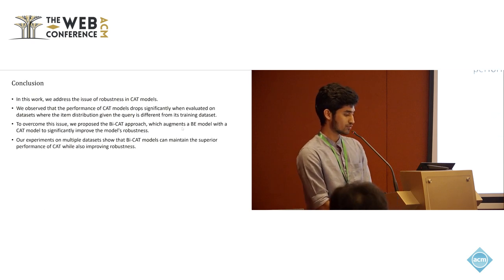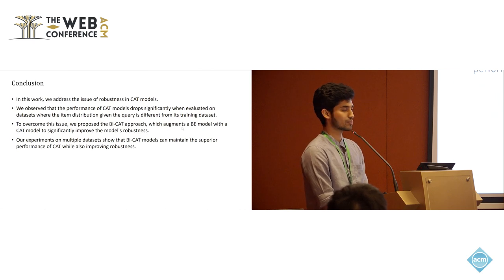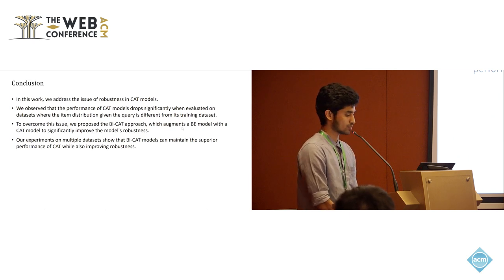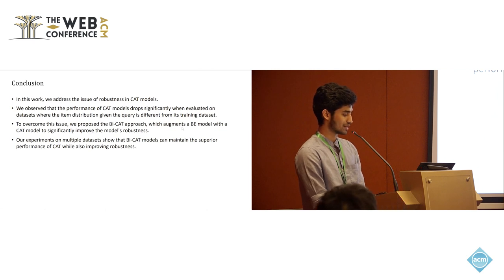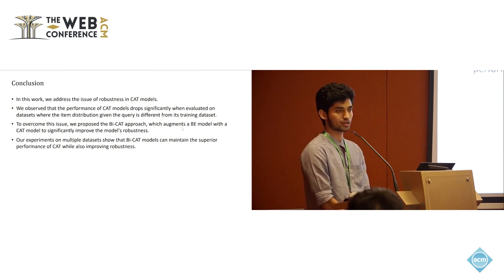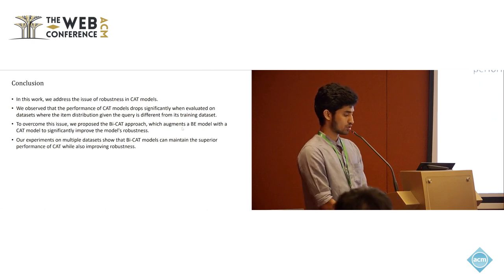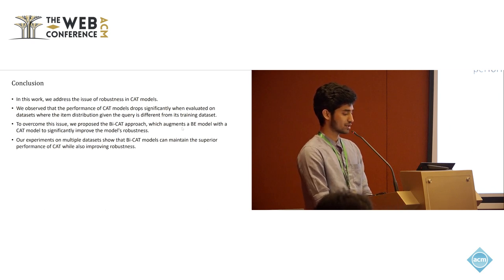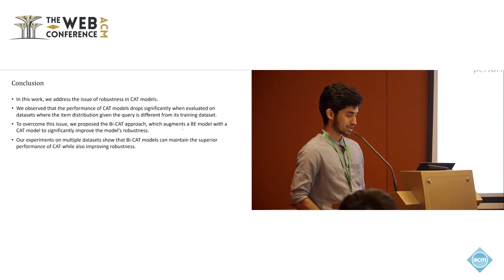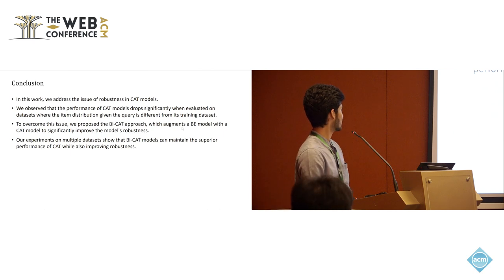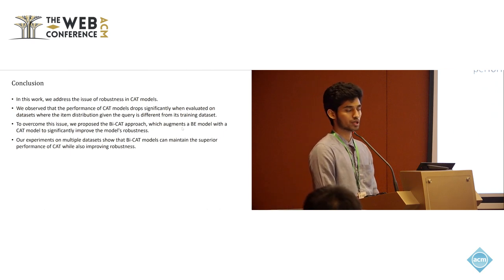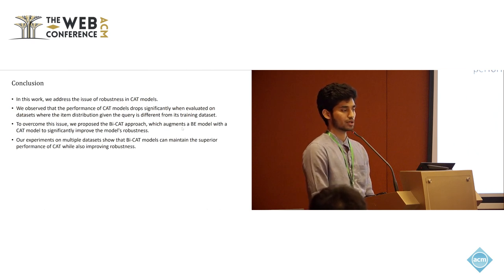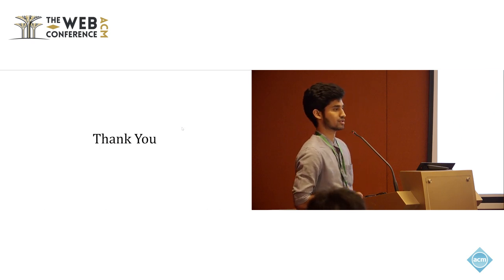To conclude, we address the issue of robustness in CAT models, specifically the conditional item distribution shift. We observe that the performance of CAT models drops significantly when evaluated on datasets where the item distribution given the query differs between train and test. To overcome this, we propose a simple change in architecture where we augment the BE model with CAT to significantly improve robustness. Our experiments on multiple datasets show that BiCat models can maintain the superior performance of CAT while also improving robustness — getting the best of both worlds: maintaining the robustness of BiEncoder and the performance of CAT.